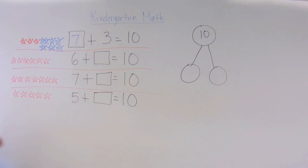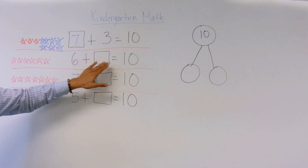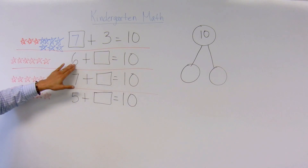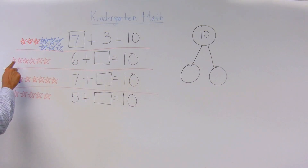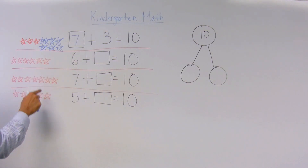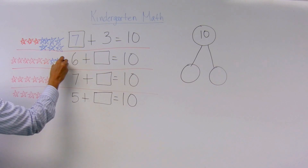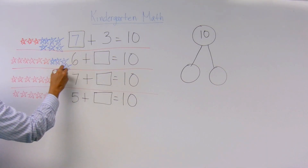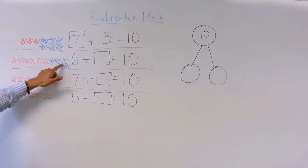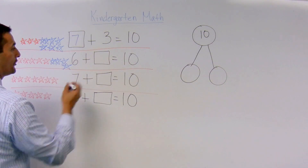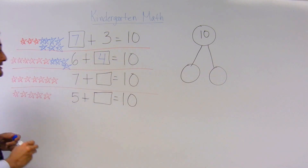Now let's take a look at this one. 6 plus something equals 10. I've got this 6 here, so I drew 6 stars. Let me just make sure: 1, 2, 3, 4, 5, 6. And I'm going to count up to 10: 7, 8, 9, and 10. How many blue stars do I have? 1, 2, 3, 4. So 6 plus 4 equals 10.